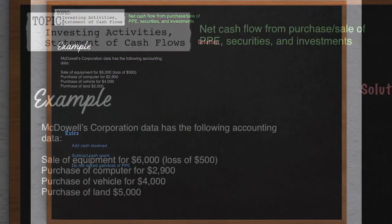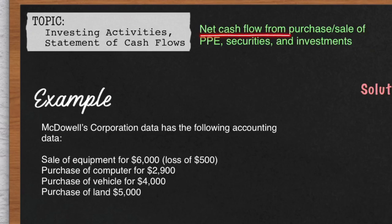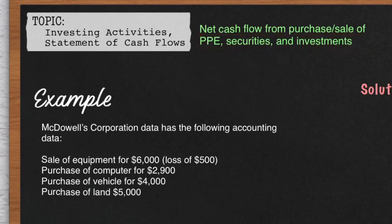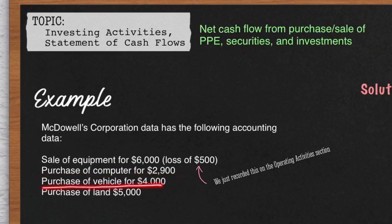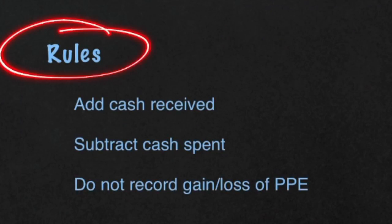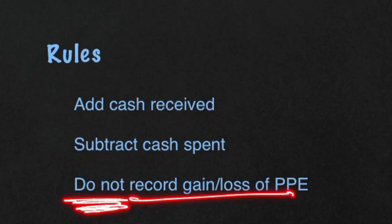The next section is the Investing Activities section of the Statement of Cash Flows. That covers the net cash flow from the purchase or sale of property, plant, and equipment, securities, and investments — basically fixed assets, stocks, and other investments. We still have McDowell's Corporation. They had a sale of equipment for $6,000 with a $500 loss, a purchase of a computer for $2,900, a purchase of a vehicle for $4,000, and a purchase of land for $5,000. The rules are pretty simple: you add cash received and subtract cash spent. Do remember you do not record any gains or losses from the sale of property, plant, and equipment. Now let's go over the solution.